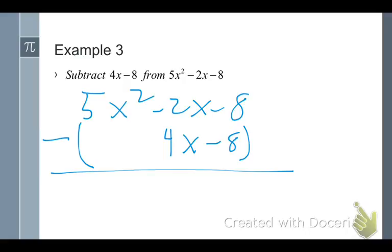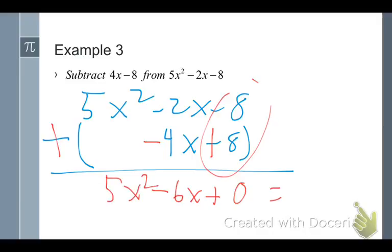Now I can do the subtraction. I'm going to tell you it's much safer to do it this way. Change that to a plus. Change the sign in this one so it's a minus. The sign in this one so it's a plus. I've changed the sign in each thing and now I have an addition problem. And I can see negative 8 plus 8 gives me a zero. Negative 2x minus 4x is minus 6x. 5x squared plus no other x squared term gives me that. So my answer is 5x squared minus 6x.